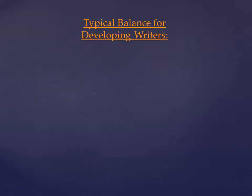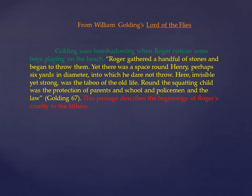Typically, developing writers will have a balance that looks something like this. They have a thesis, they have a good piece of evidence, but then their analysis is pretty scanty. You can see that the topic sentence is pretty weak — it doesn't really explain much, and you can't tell what the student's thesis is. They have a good piece of evidence, but then they don't do much analysis. It's basically just restating the evidence.